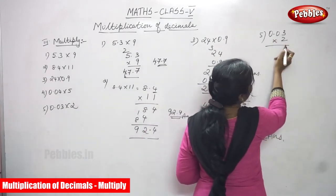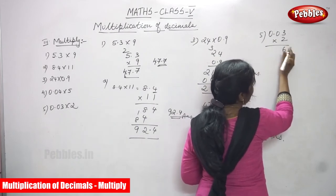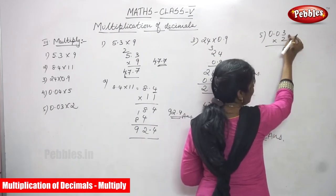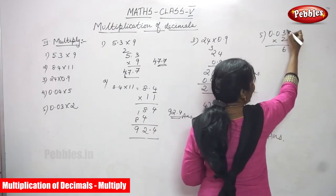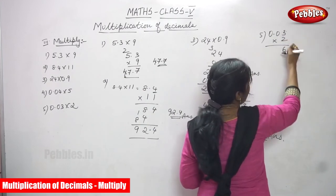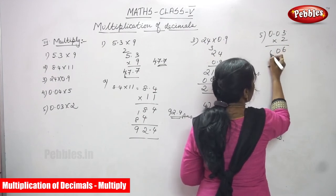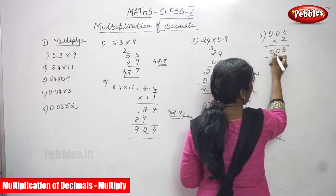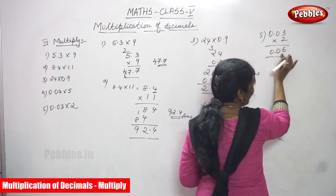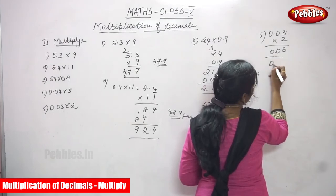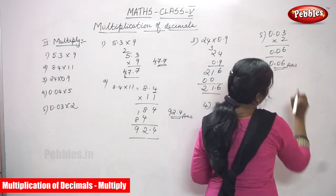Now the fifth sum: 0.03 into 2. Start with the decimal part — the hundreds place. 3, 2, 6. Then 2 into 0 is 0 and 2 into 0 is 0. From the right side move two decimal places. The answer is 0.06.